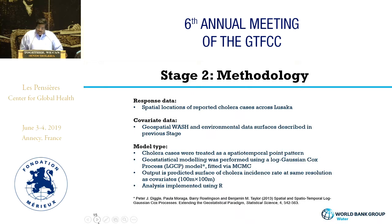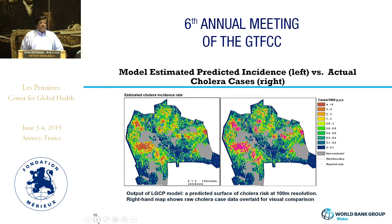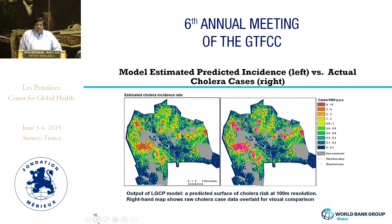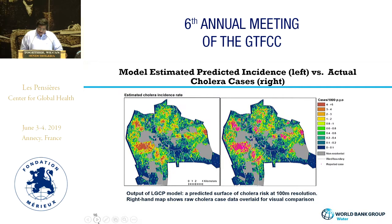Using these geospatial covariate surfaces, we construct a predictive map of cholera for the city of Lusaka. On the left-hand side you see the predicted cases and on the right-hand side the actual cases. There is a lot of correspondence, and other statistics also tell us that the prediction is quite good.